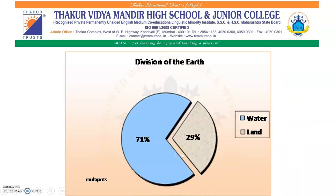This figure shows the proportion of water and land on the earth. You can see that 71% of the earth is covered by water whereas only 29% is covered by land.